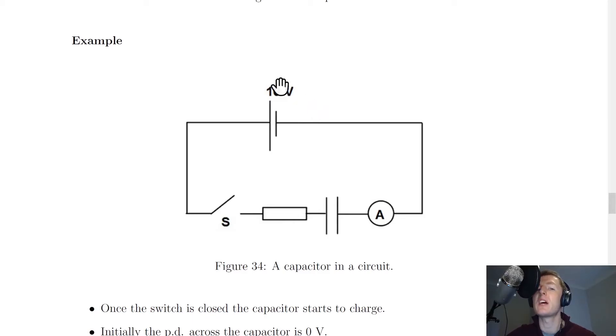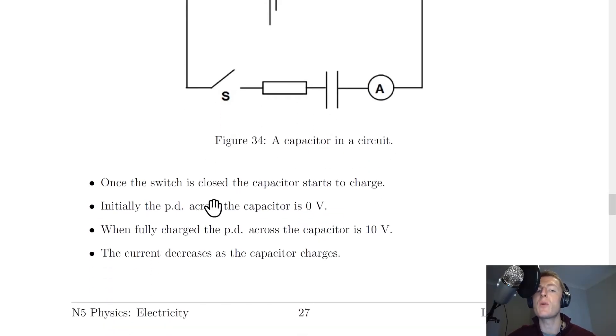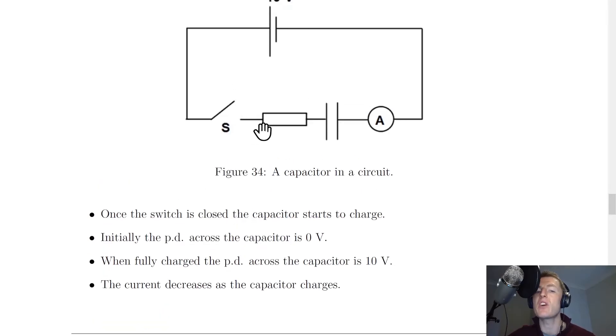Consider a simple circuit with a 10-volt battery, a switch, resistor, capacitor, and an ammeter. This is how you would connect a capacitor in series. Once the switch is closed, the capacitor starts to charge up.